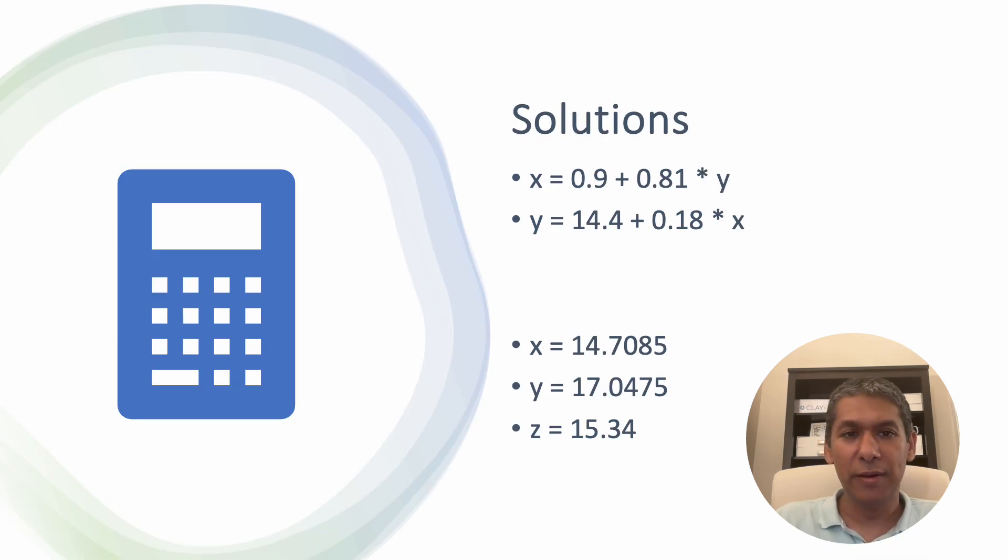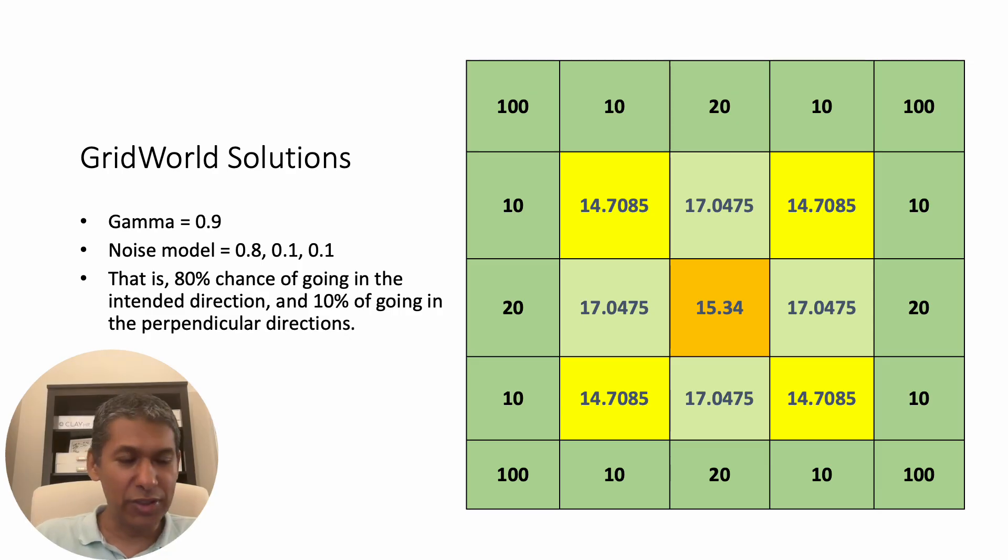And we can solve these equations. Essentially, we only have to solve the equations for X and Y. X is equal to 0.9 plus 0.81Y. Y is equal to 14.4. Okay, that's the amount we had calculated earlier. Y is equal to 14.4 plus 0.18X. And those are two linear equations. We simply solve them. We get these two. And Z was 0.9 times Y, so we get this one. So that's our solution.